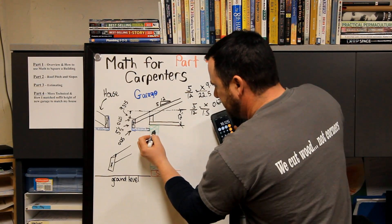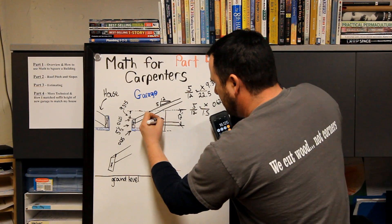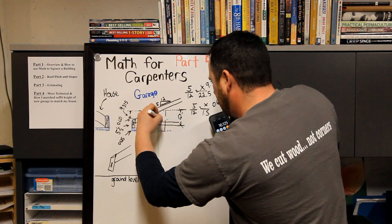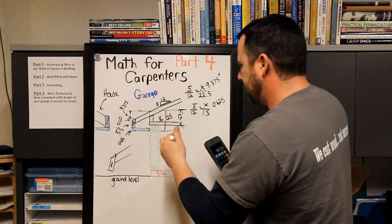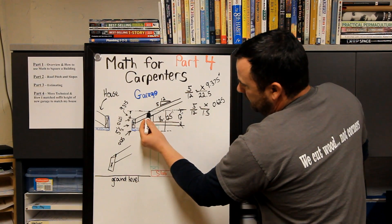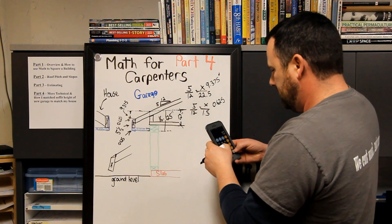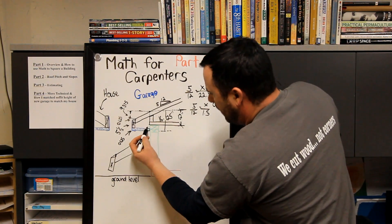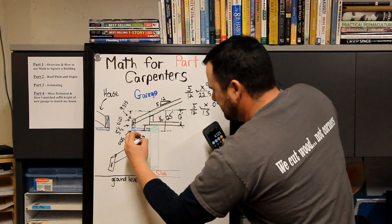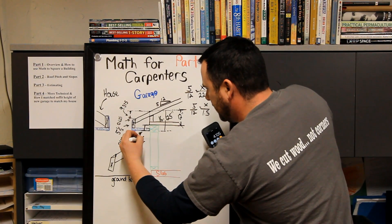So from the very top to the bottom of my soffit, right here, is 16.125 inch drop. Now I know that I have a 12-inch heel height, so I just minus 12 inches. So from the top of my wall to the bottom of my soffit is 4.125 inches.